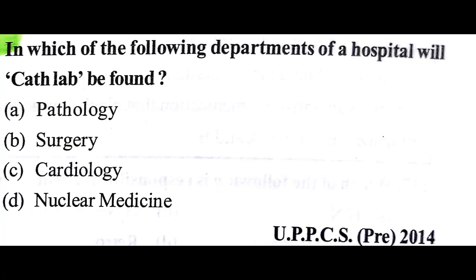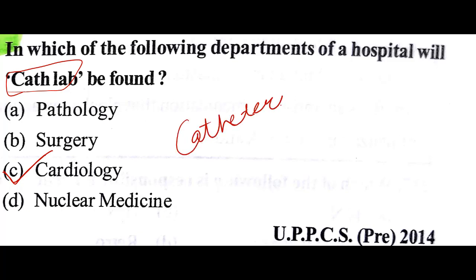In which of the following departments of a hospital will a cath lab be found? The answer is C: cardiology department. By cath lab we mean a catheterization lab, and in this lab, with the use of technology, we can visualize the arteries of the heart.